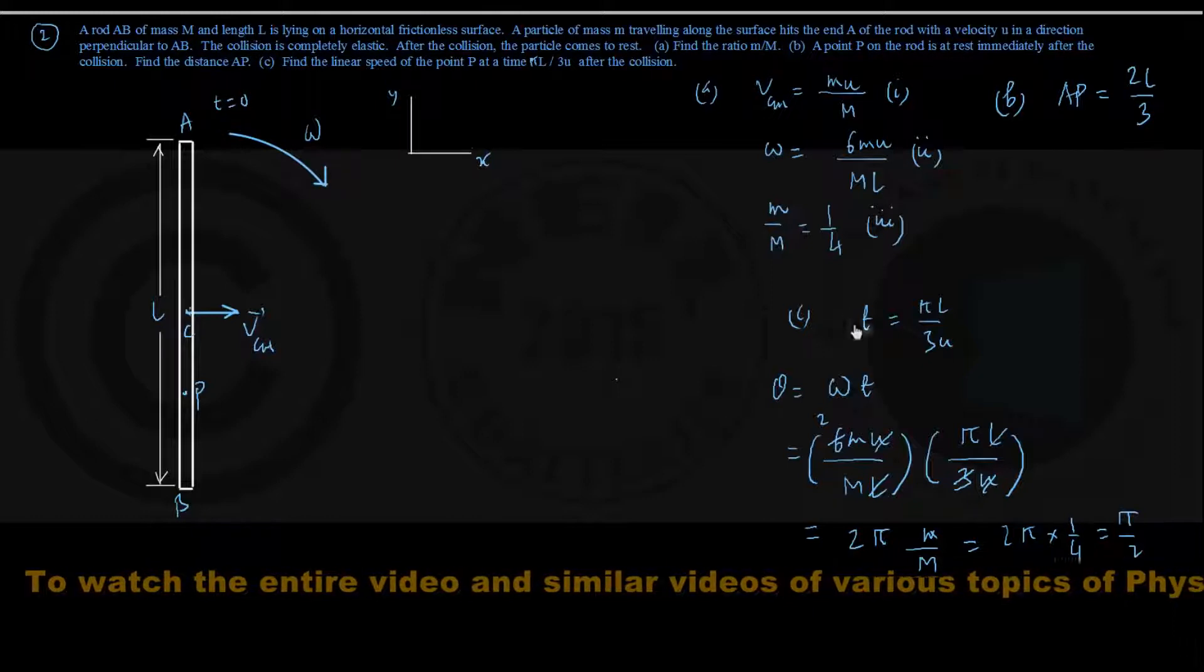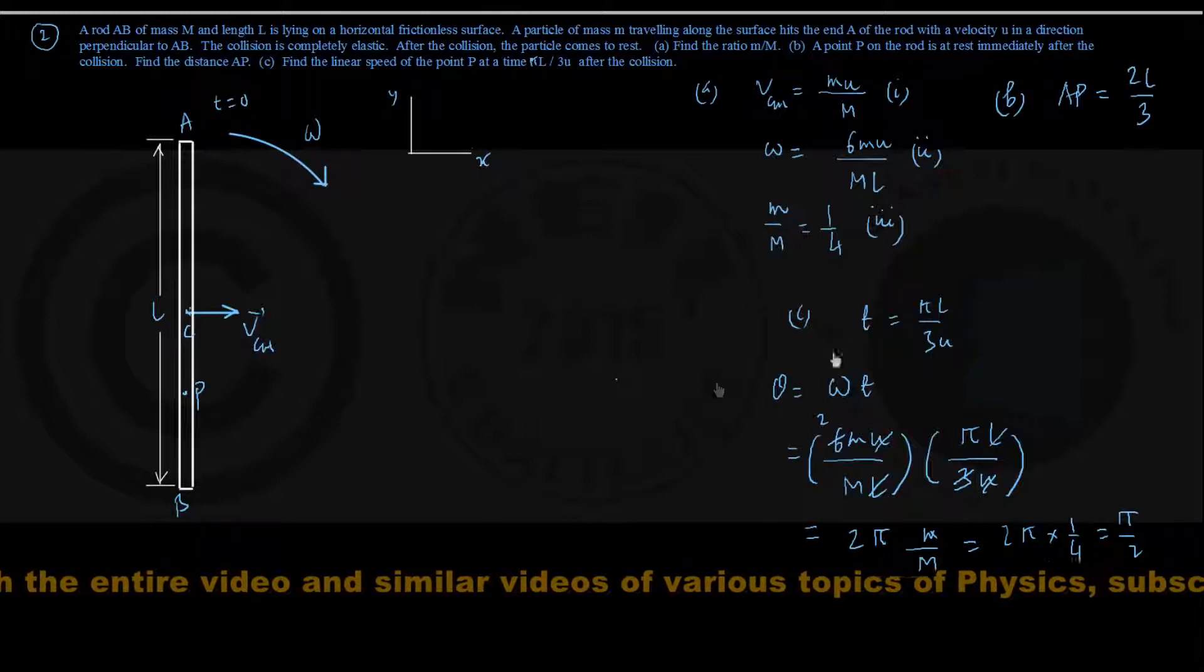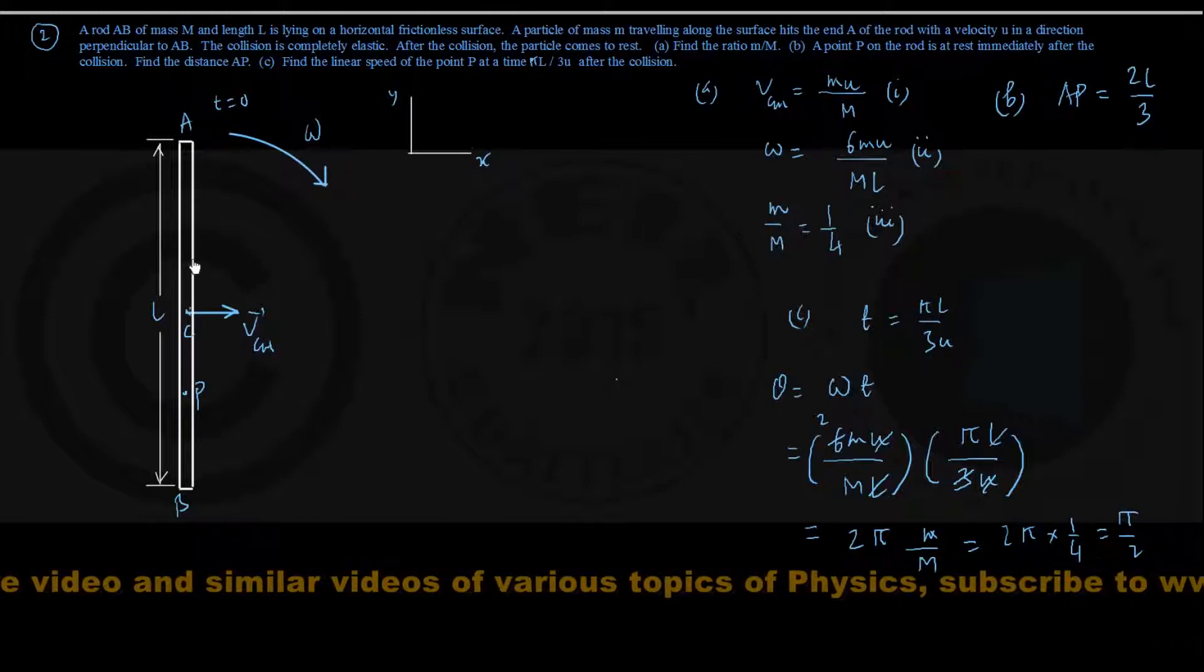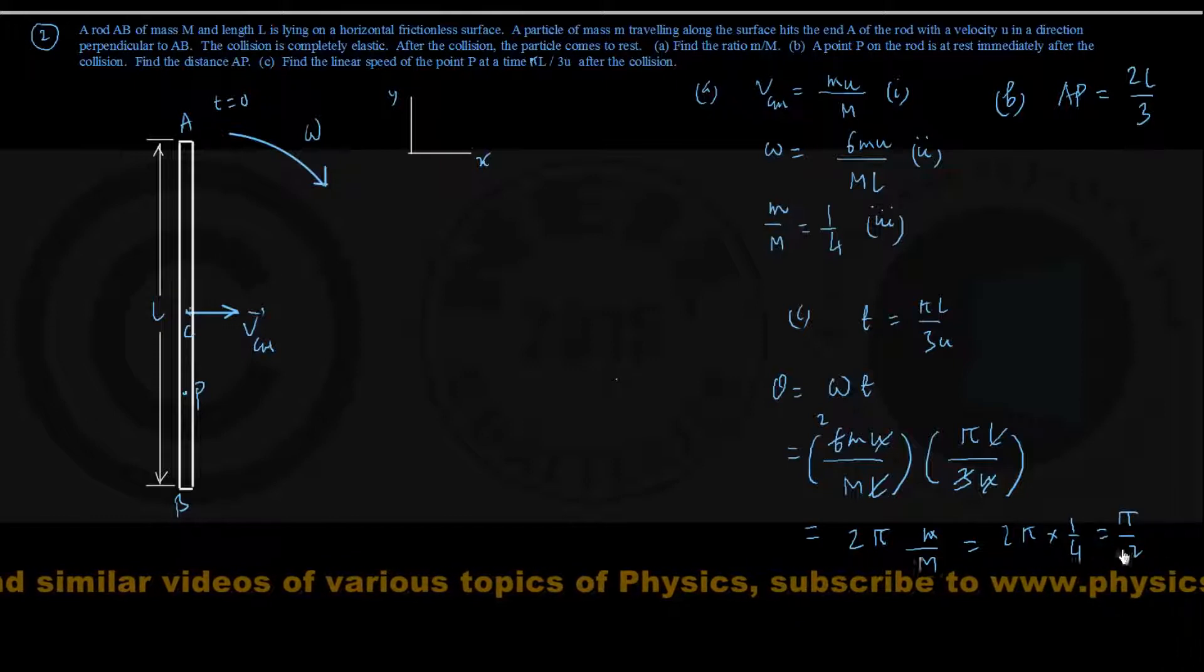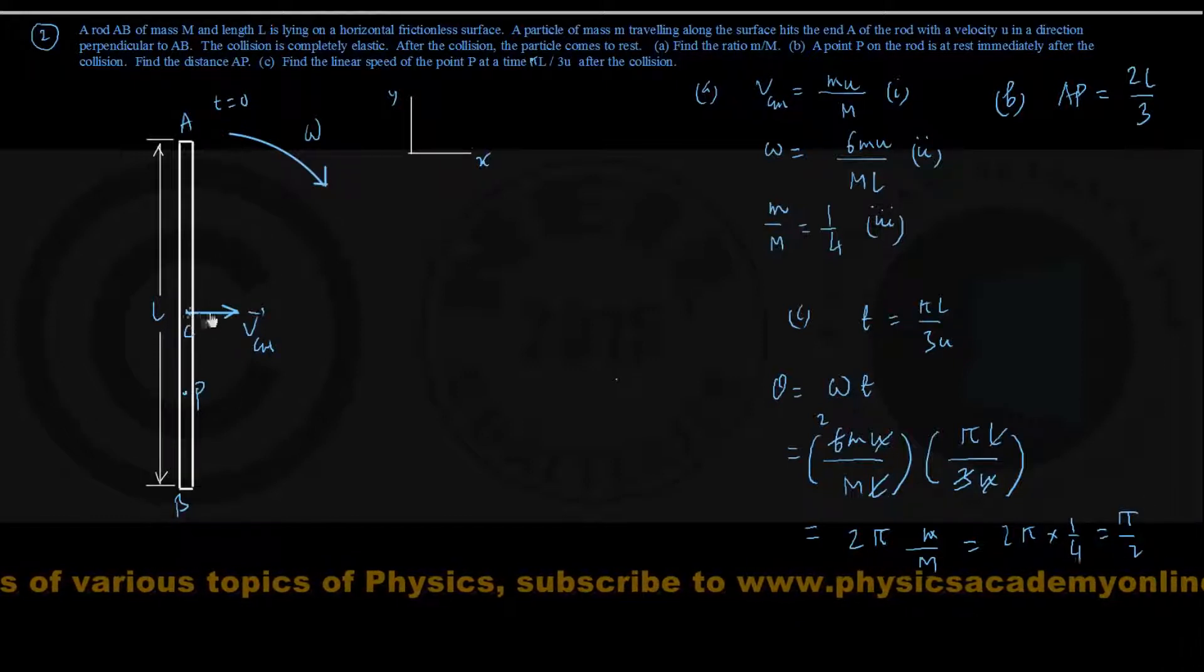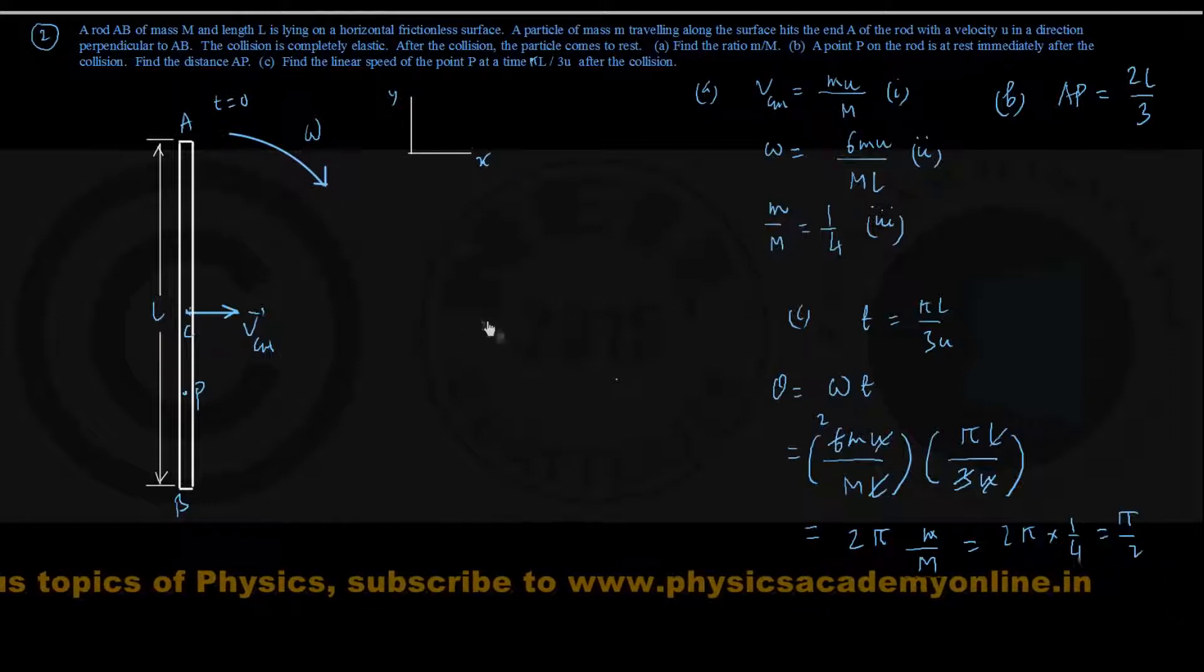In time t equals πL by 3u, the rod has rotated to an angle of 90 degrees. It means as its center of mass moves forward in the plus x direction.